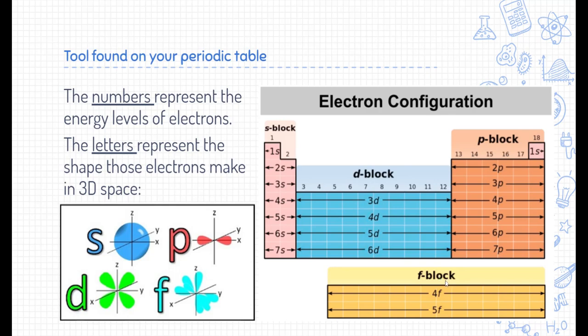The letters there, just so you know, represent the shape that those electrons make in 3D space. That's a little bit beyond the scope of this class, but you can see here that electrons, when they float around the nucleus, make various three-dimensional shapes.